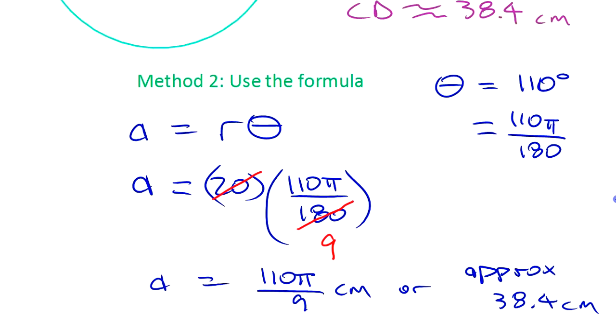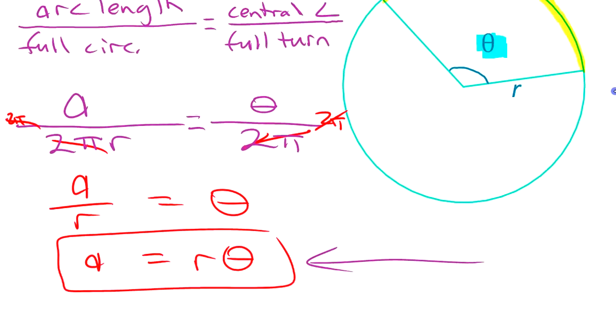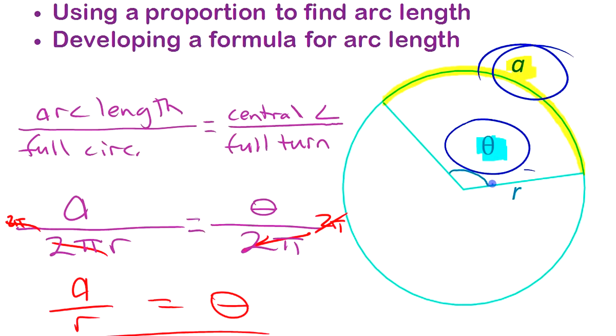That's it. That's the relationship between the arc length of a circle, the central angle, and the radius.